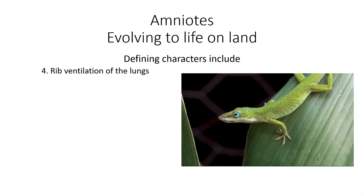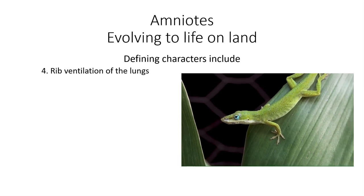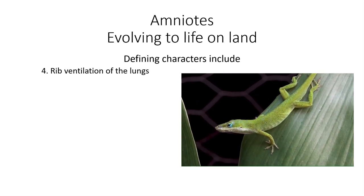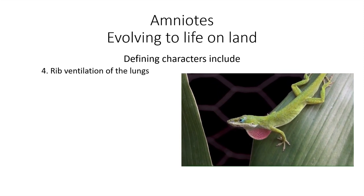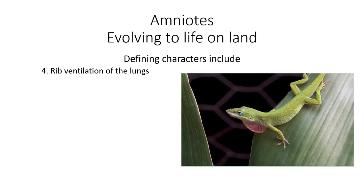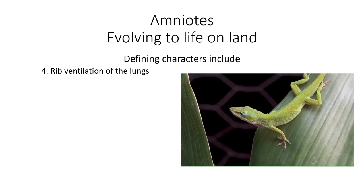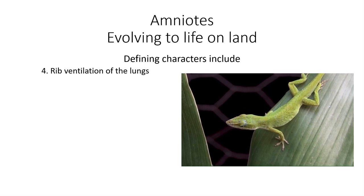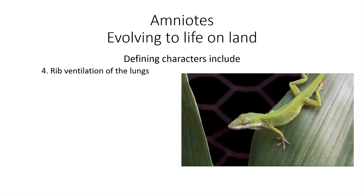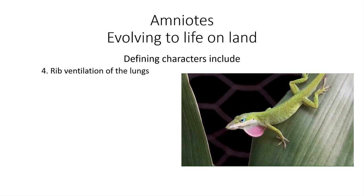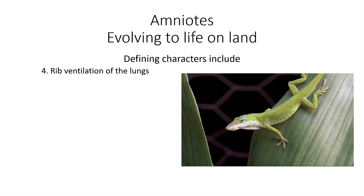The other thing is they have rib ventilation of the lungs — it moves in and out, which increases and decreases the size of the lungs, either pulling air in or moving air out. This is a Carolina anole, and you can see it breathing; it's also throwing out its dewlap — it was probably warning me off.